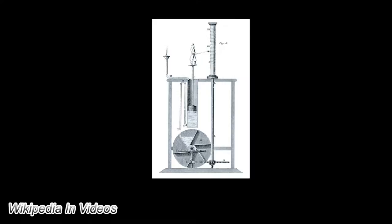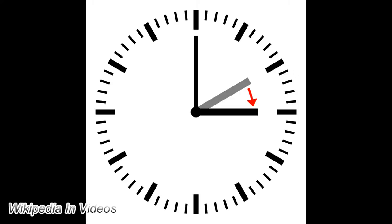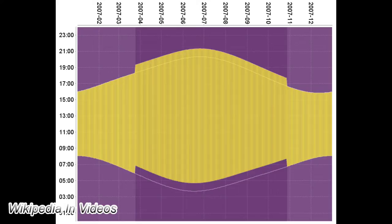A common implementation of DST is to advance clocks by one hour in the spring — spring forward — and retard clocks by one hour in autumn — fall back — to return to standard time. In other words, there is one 23-hour day in the spring and one 25-hour day in the fall.